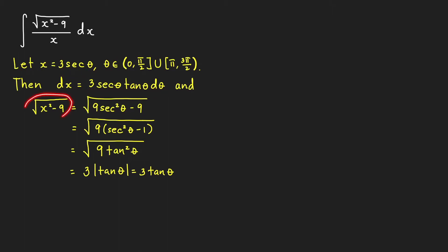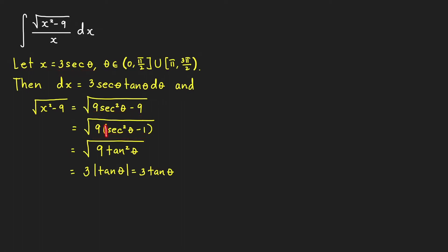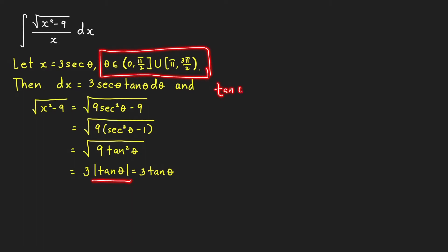The radical square root of x squared minus 9 can be written as square root of 9 secant squared theta minus 9. Factoring out the 9, we get the other factor secant squared theta minus 1. Using the Pythagorean identity, this equals tangent squared theta, so the radical equals 3 times the absolute value of tangent theta. Using the restriction on theta, tangent theta is greater than or equal to 0, so we can write this as simply 3 tangent theta.